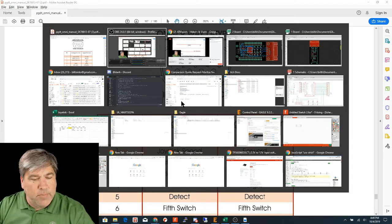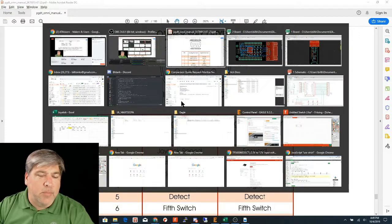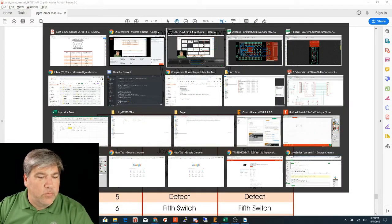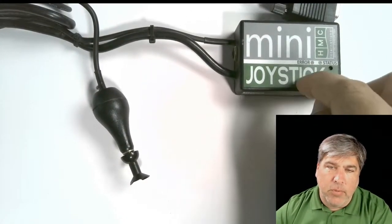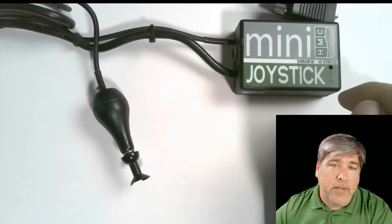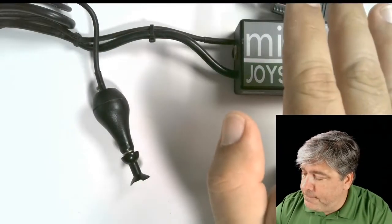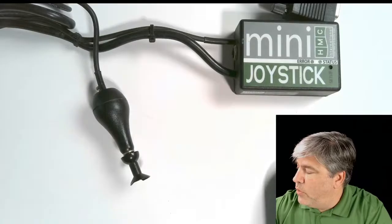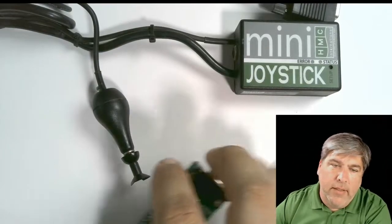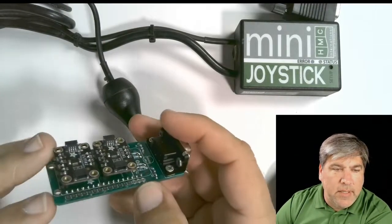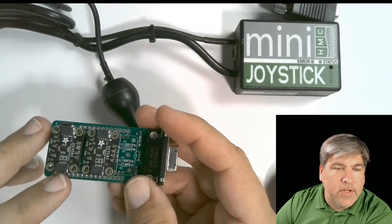I guess probably the best place to start would be with this, the documentation for the joystick. PG Drives, which makes a lot of the motor controllers for the power chairs, published a document for their Omni controller that happened to completely call out exactly how this joystick works. Their nine-way D-type connector is spelled out pretty clearly on what it does.